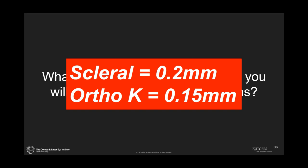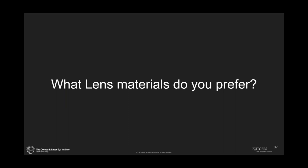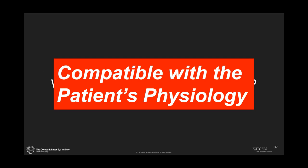Do I like to go to lenses this thin? Occasionally there are times when it makes sense. What lens materials do you prefer? I like lens materials that are compatible with the patient's physiology. We'll talk more about decays and wetting angles, but essentially I'm trying to find a lens material that is going to wet well, not compromise the corneal physiology so that the cornea remains in good shape, and just make sure this is going to work well for the individual. I can use various different material parameters to modify that and improve the overall outcome.